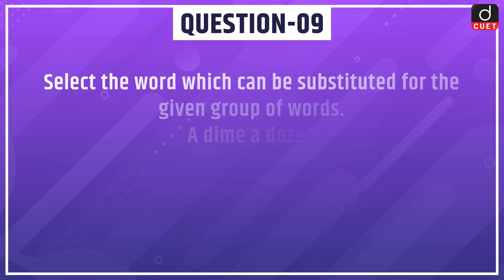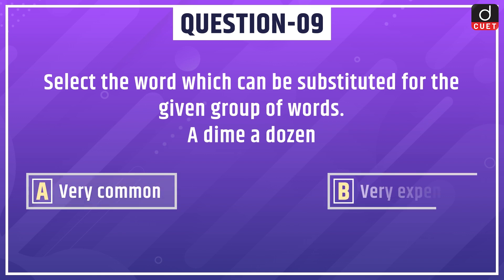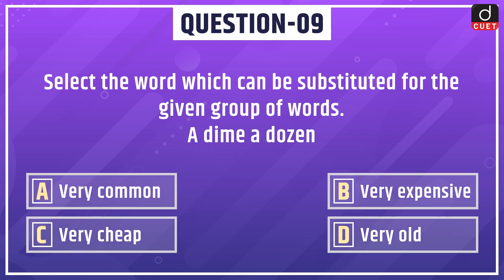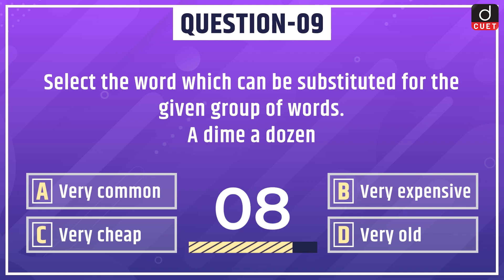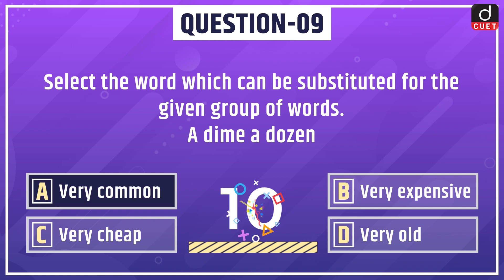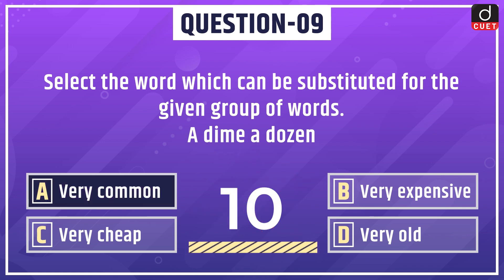Next question: select the word which can be substituted for the given group of words — 'a dime a dozen.' Options: very common, very expensive, very cheap, or very old. The correct answer is option A: very common.